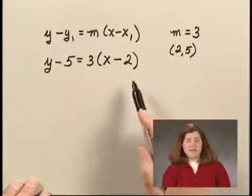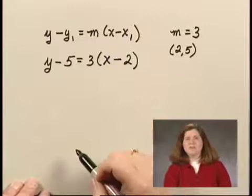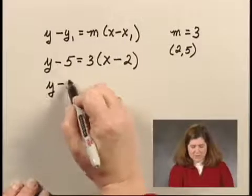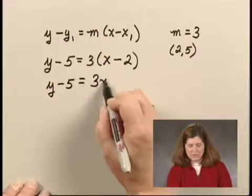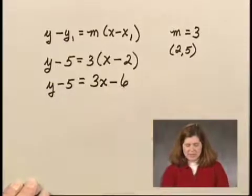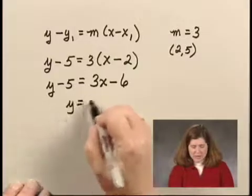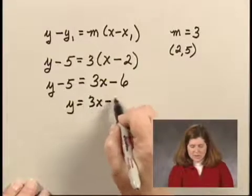This is an equation of the line. Let's solve for y to write it in slope-intercept form. y minus 5 equals, multiplying, I have 3x minus 6. Adding 5 to both sides of the equation, I have y equals 3x minus 1.